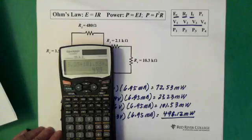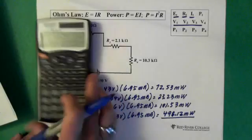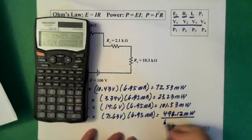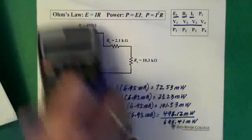72.53 plus 23.23 plus 101.53 plus 498.12, and hopefully I punched in all the right numbers, equals 695.41 milliwatts.